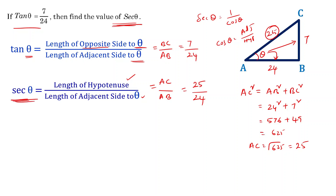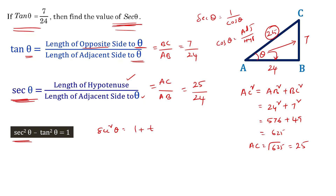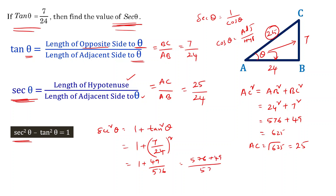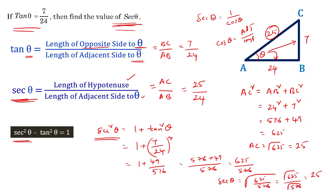Alternatively, we can use the trigonometric identity. Given tan theta, we can find sec theta using the identity: sec squared theta minus tan squared theta equals 1, so sec squared theta equals 1 plus tan squared theta. Substituting, this is 1 plus (7/24) squared, which equals 1 plus 49/576, giving 576 plus 49 over 576, that is 625 over 576. So sec theta equals the square root of 625 over 576, which is 25 by 24 — the same result.